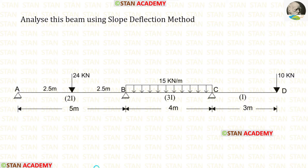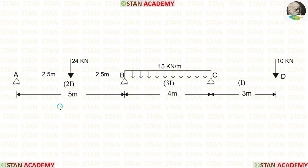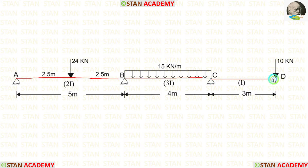Hello everyone. Today we are going to analyze this beam using the slope deflection method. Before analyzing, let us see the beam one time. In this beam, there are two spans: span AB and span BC. Also, there is an overhanging span CD.